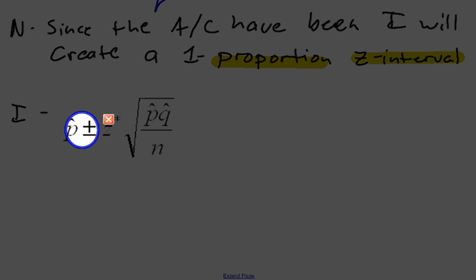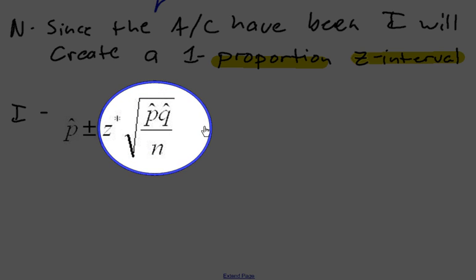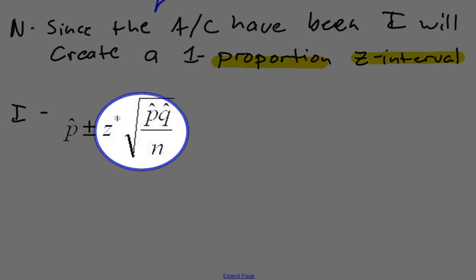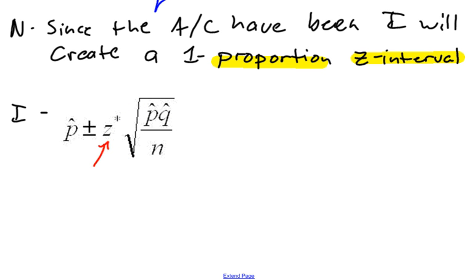If you notice, I'm going to take my sample proportion right here. I'm going to multiply, I'm going to add and subtract, add to it and subtract from it, this part right here, the Z, this Z star times the square root of P hat, Q hat over n. This is called the margin of error. And the margin of error is always made up of a critical value. This is a critical value. And this part is the standard deviation of the sampling distribution. So in this case, the standard deviation of P hat. So I need to go ahead and fill in all the blanks.